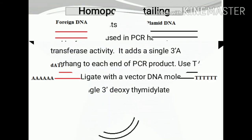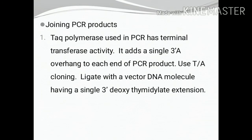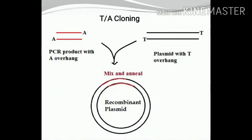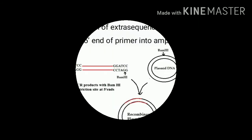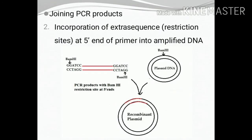There are three methods of joining PCR products. The first method is TA cloning. Taq polymerase used in PCR has a terminal transferase activity — that is, it adds a single 3-prime A overhang to each end of the PCR product. This can be ligated to a vector DNA molecule having a single 3-prime deoxythymidylate extension.